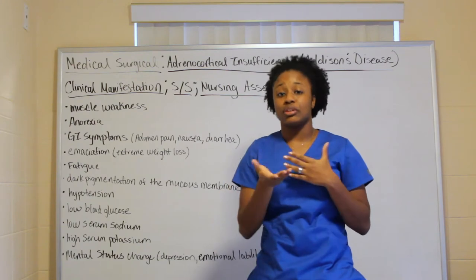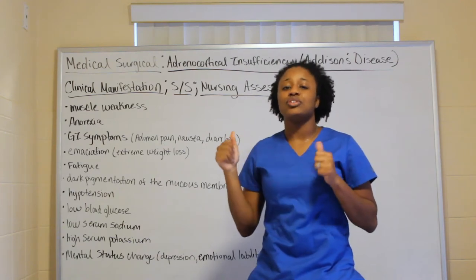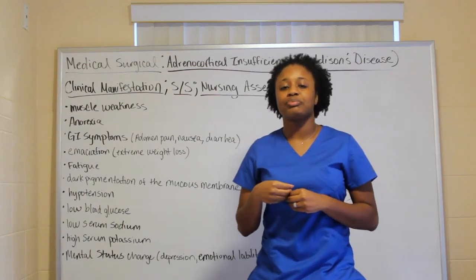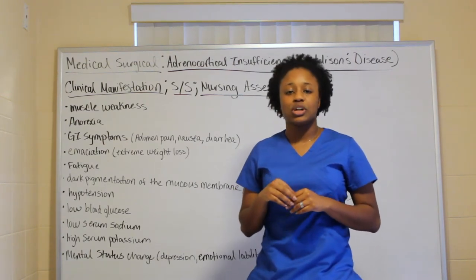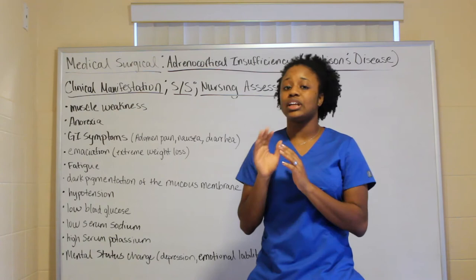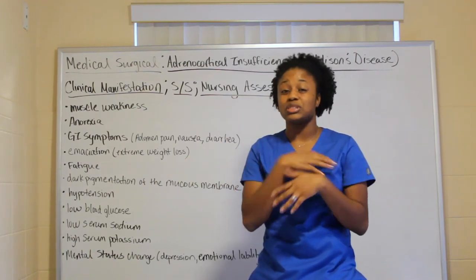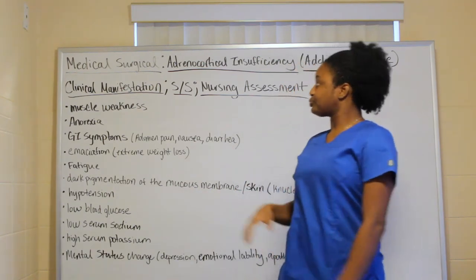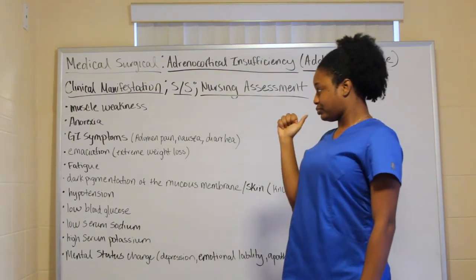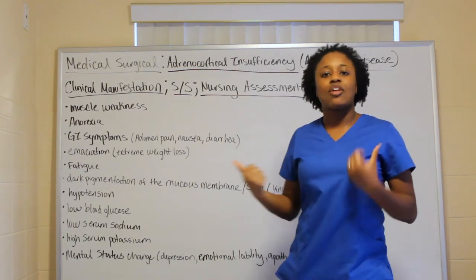Please remember the signs and symptoms — you will be tested on them. When this topic came up in nursing school, there were definitely questions about electrolyte levels and different signs and symptoms. You don't want to confuse Cushing's and Addison's and reverse the symptoms, because they're so similar. Starting with Addison's: you have muscle weakness.